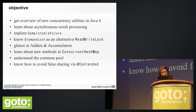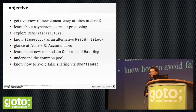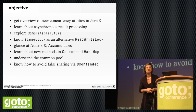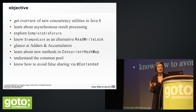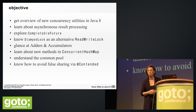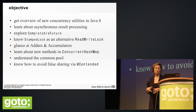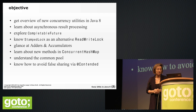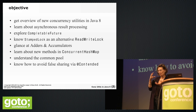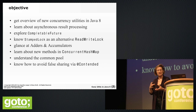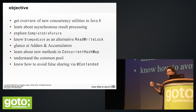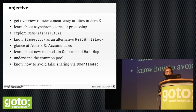We will learn about asynchronous result processing. A new class called CompletableFuture has been added, which is an alternative to the regular Future that was added with Java 5. It's a different way of processing the results produced by concurrently running threads.